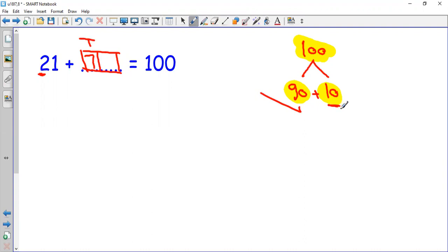Now I have to make a 10. I have here 1. How many more to make a 10? I need 9. So in total, I need 79 with 21 to make 100. So our strategy here, make 90 and 10.